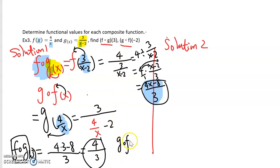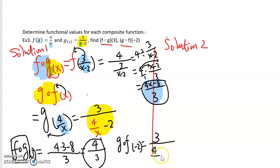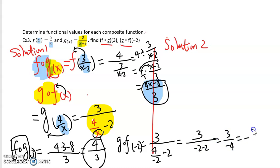For the second question, we evaluate g∘f(−2). We plug −2 into the g∘f composite function by replacing the variable x with negative 2. Simplifying: 4 divided by negative 2 is negative 2, and negative 2 minus 2 is negative 4. So we get 3 over negative 4, which is negative 3/4, because positive divided by negative is negative. That's one way to do it, though the process of finding the composite function is somewhat complicated, and we still have to plug in the value afterward.